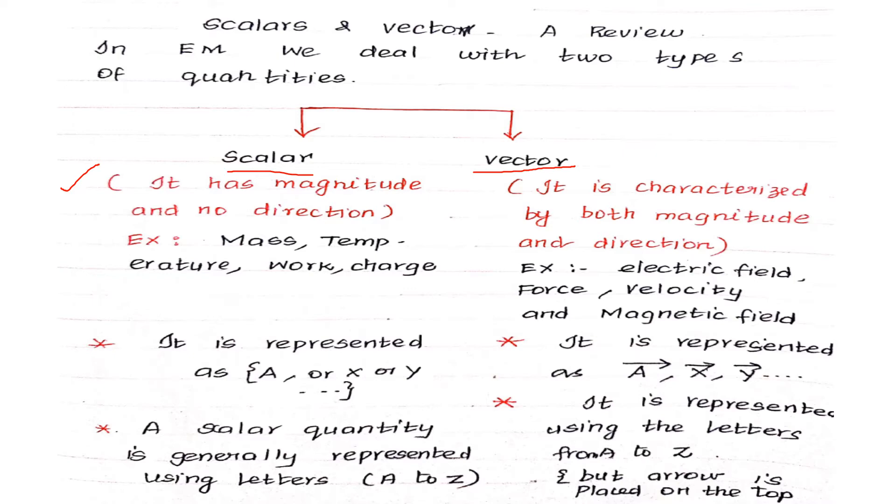What is vector quantity? It is characterized by both magnitude and direction. Example, electric field, force, velocity, magnetic field. These vectors have some magnitude and direction, whether it is this direction or opposite direction. That is vector.